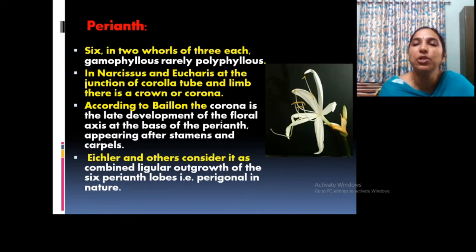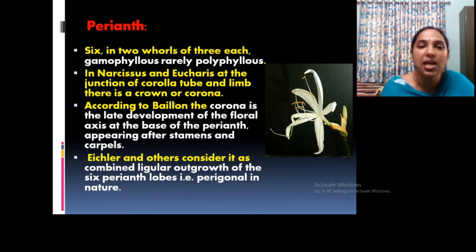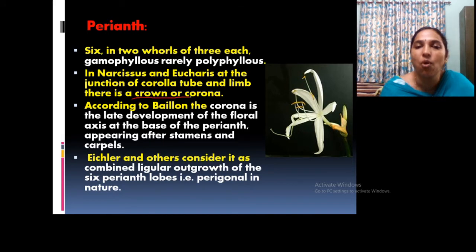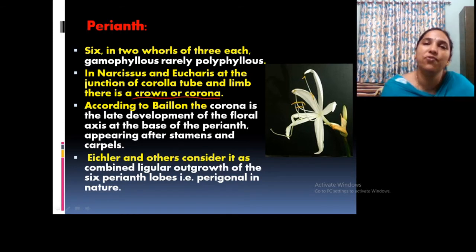Regarding the perianth, look at the flower — usually a 3+3 arrangement, trimerous condition, arranged in two whorls. Polyphyllous and rarely gamophyllous conditions are observed. There is also a peculiar feature: the presence of a crown or corona at the junction of the perianth tube and limbs. This staminal corona is a typical feature of these members.